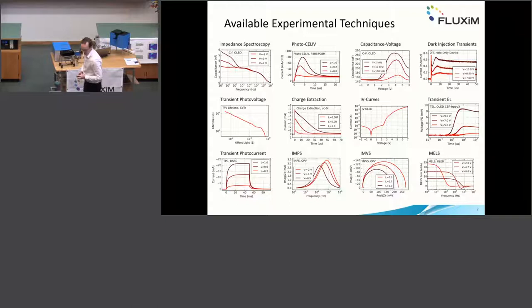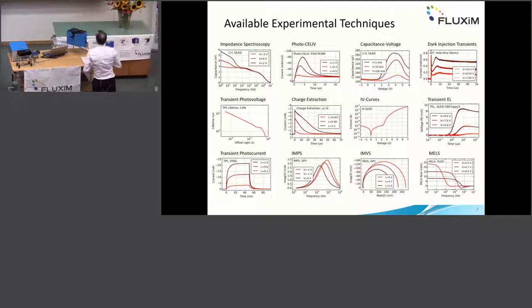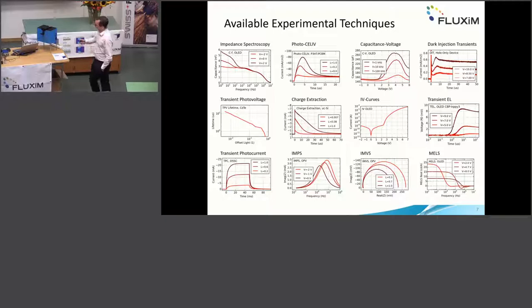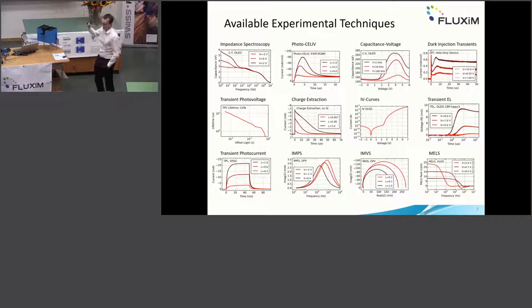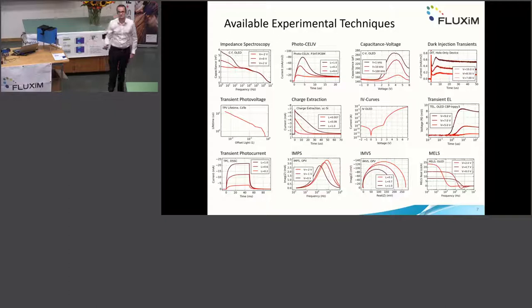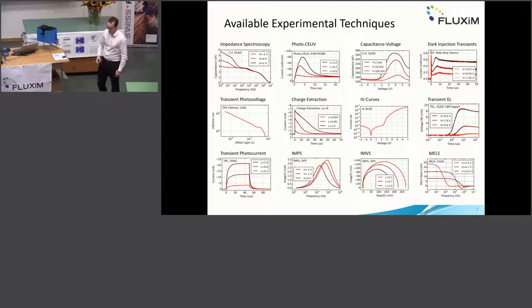PyOS currently has a bunch of available techniques. It can measure impedance spectroscopy with offset light and offset voltage. It can measure photo-CELIV and dark CELIV — a technique used to extract charge carrier mobility. It can measure capacitance-voltage, dark injection transients, which is used to measure mobility of monopolar devices, and transient photo voltage (TPV), a well-known technique to measure charge carrier lifetimes.